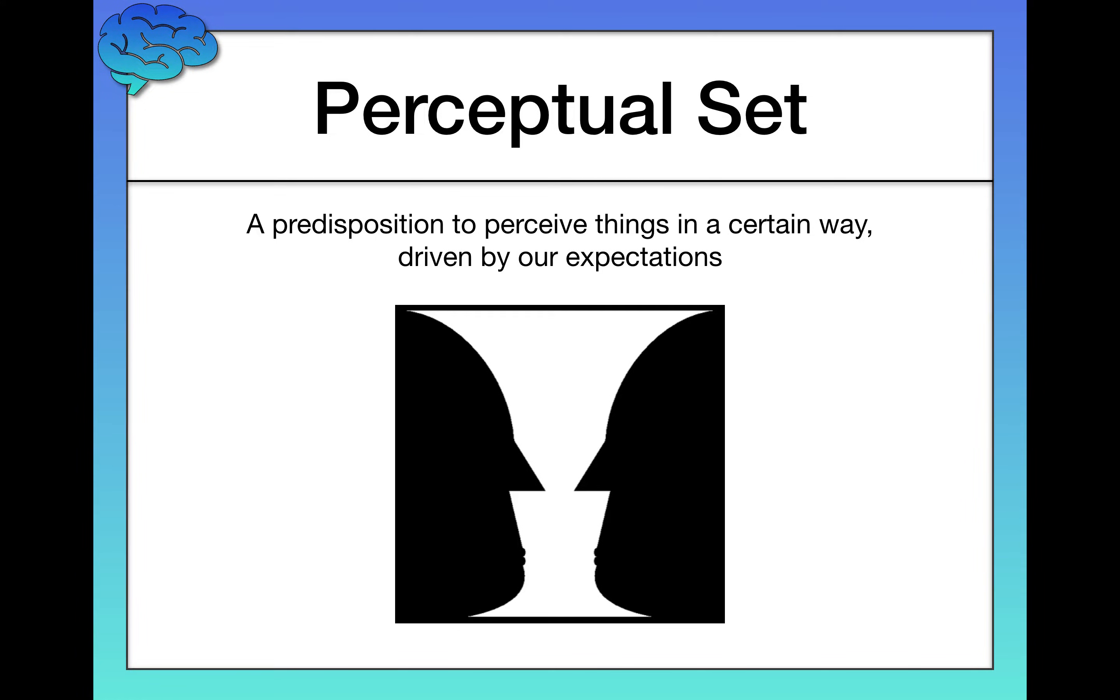A lot of terminology, a lot of jargon, but the ideas are really simple. Here's an object or an image, I should say, that you've probably seen something like before. This is called a bistable image because there are two ways to interpret it.